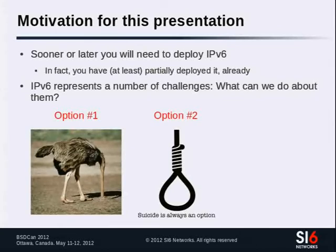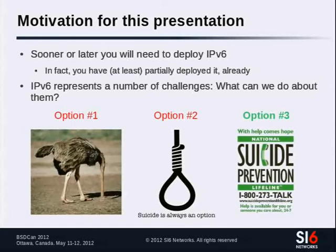Option two is sometimes a consequence of option one: you start ignoring the IPv6 security issues, but eventually you find out about them and they don't look nice. Option three is the path we are trying to follow, which is about discussing the security implications of IPv6 and trying to do something about them.